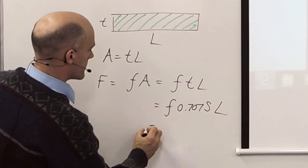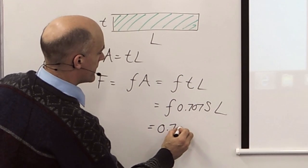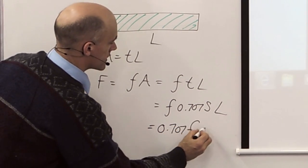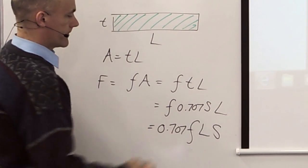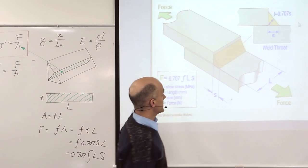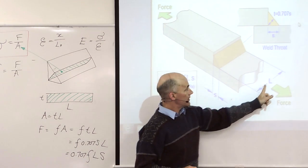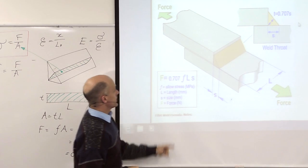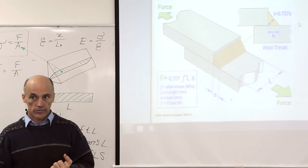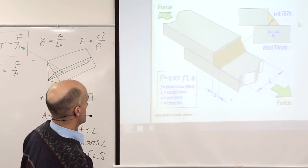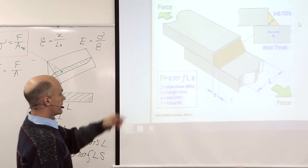Or rearranging this in the other order, 0.707 stress length size. So S is the size of the weld measured along the flat. L is the length of the weld. Stress is the allowable stress in the weld. And 0.707 comes from 45 degrees.